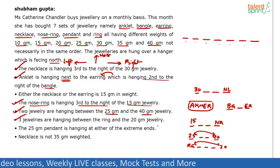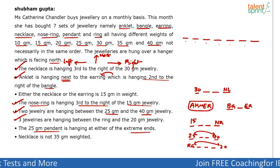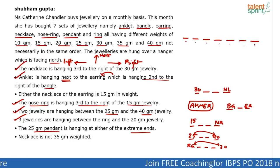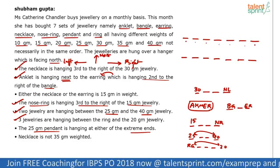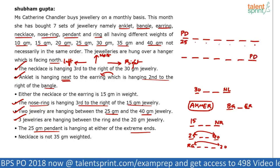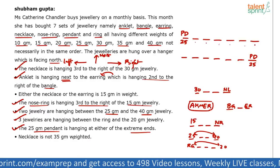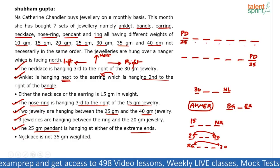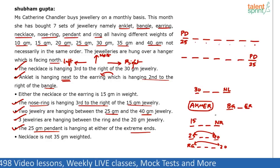The 25 gram pendant is hanging at either of the extreme ends. This is a definite clue — the pendant is 25 grams and it is at either extreme end, which is either position 1 or position 7. So let's take two possibilities — Case 1: pendant on the left end (PD, 25g); Case 2: pendant on the right end (PD, 25g). Last clue: necklace is not 35 grams in weight. So these are all the clues we have.